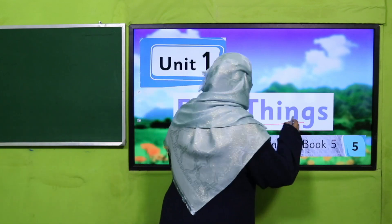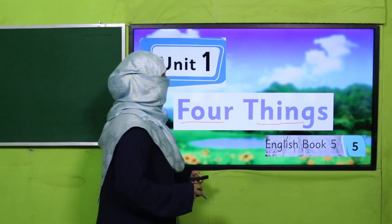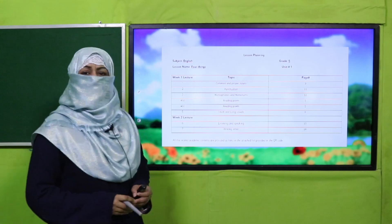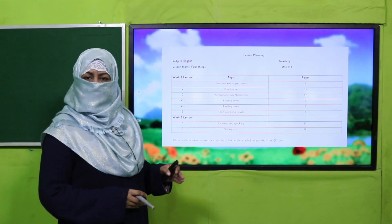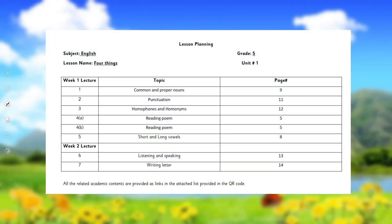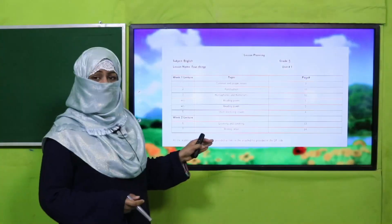We are going to start Unit 1. Its title is 'Four Things.' My dear fellow teachers, I have divided this unit into several lectures. You may follow it or you may modify it for your convenience.